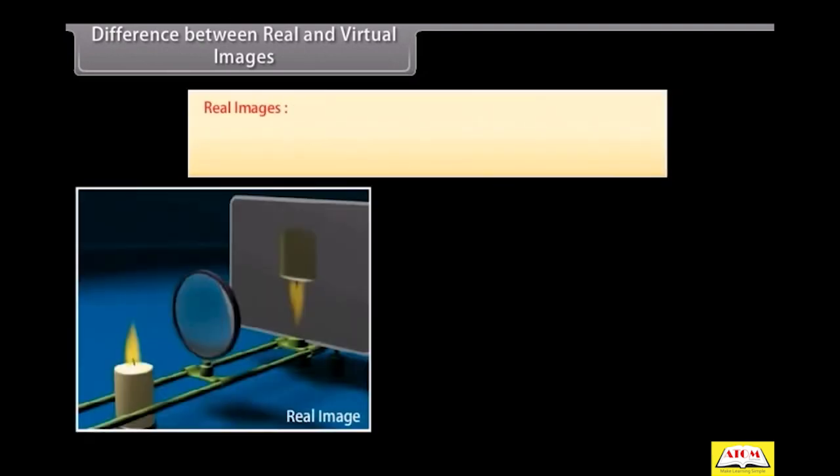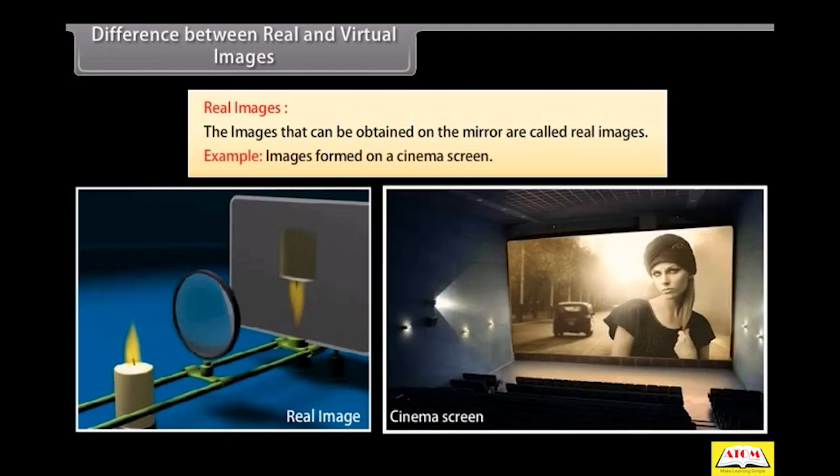Difference between real and virtual images. Real images: The images that can be obtained on the mirror are called real images. Example: Images formed on a cinema screen. It is formed by a concave mirror.